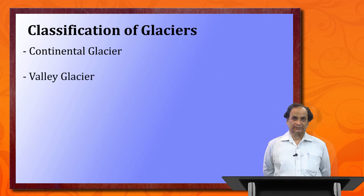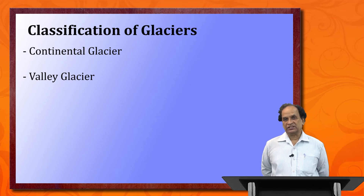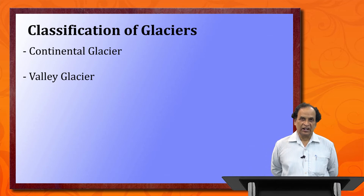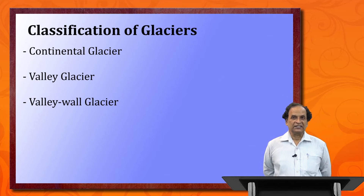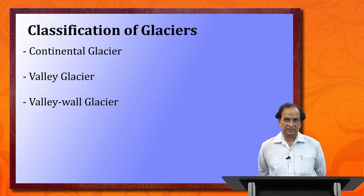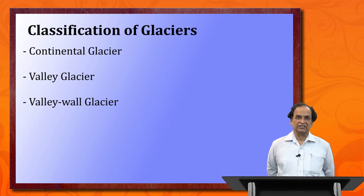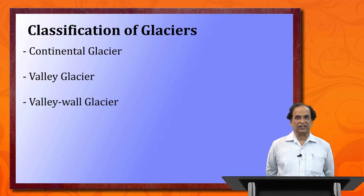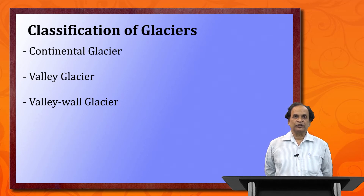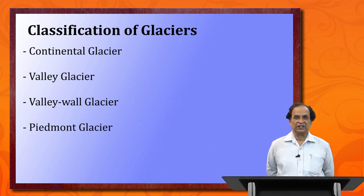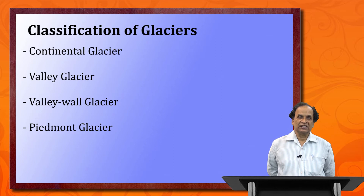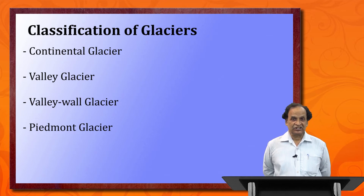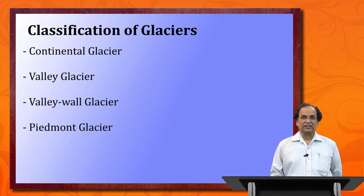The second type is the valley glacier — long glaciers flowing through the valley in the mountains, like in the Himalayas, the Alps, the Rockies, and the Andes. Third are valley wall glaciers: smaller glaciers joining with the valley glacier, coming down from the valley walls on either side. They are smaller than valley glaciers and obviously smaller than continental glaciers. Finally, the fourth type is Piedmont glaciers, which can be found in the Arctic regions. Let us look at each type.